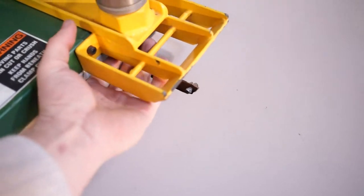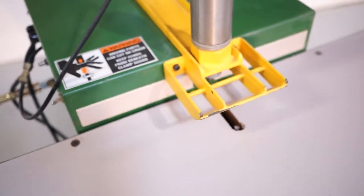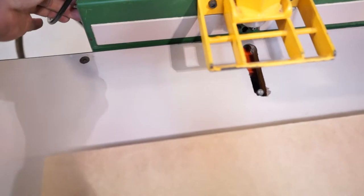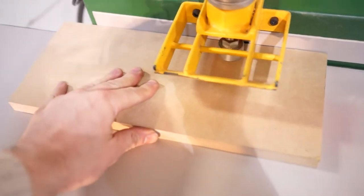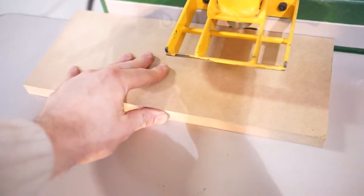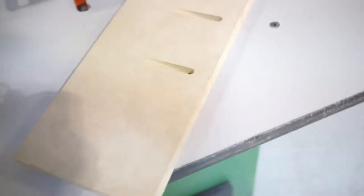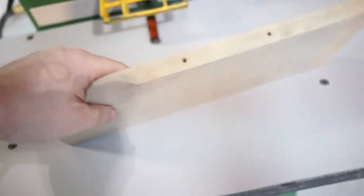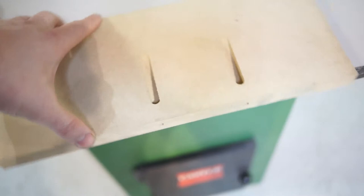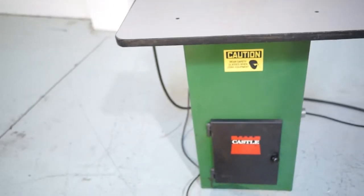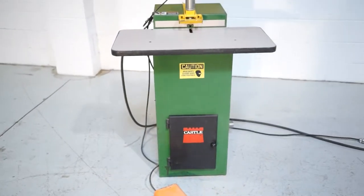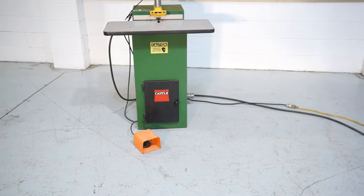We did put a new rubber insert on the hold down paw. As you can see, those holes do go all the way through. Nice clean pockets. Bits seem to be in really good shape. We did try it on some 3/4 Baltic birch in the back and it seems to be cutting fine.